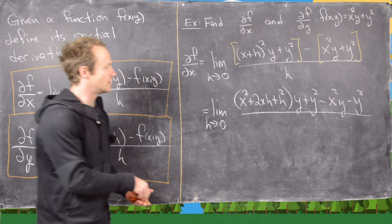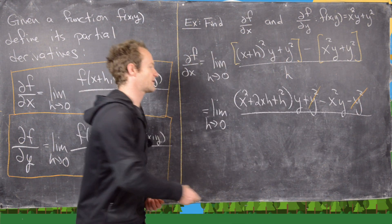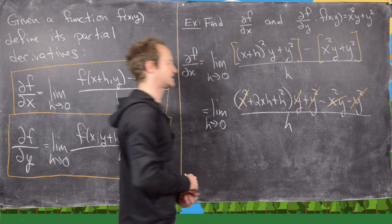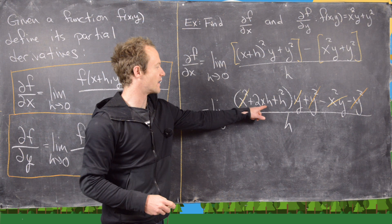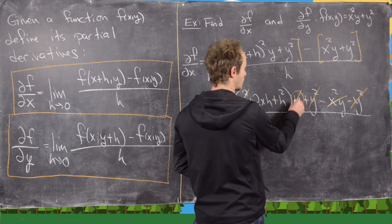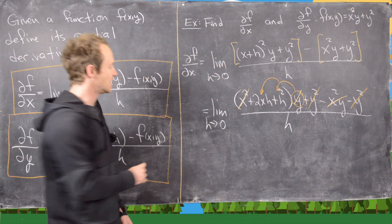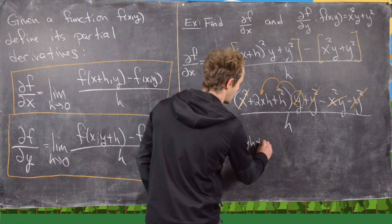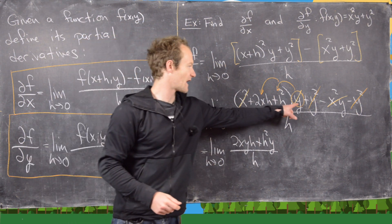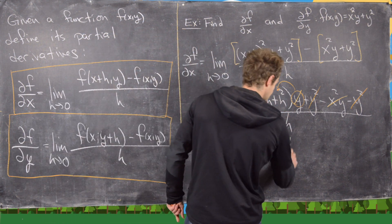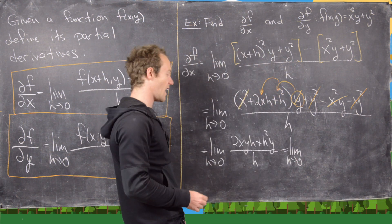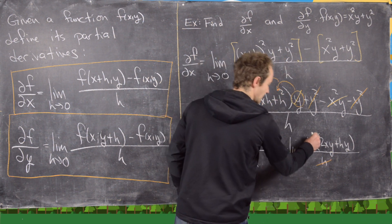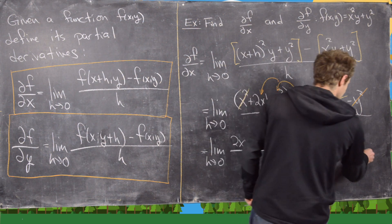Now let's see what can simplify. The y squared terms cancel, and x squared y cancels with that term. What we're left with is something we can factor an h out of. Distributing the y gives us the limit as h approaches 0 of 2xyh plus h squared y, all over h. Factoring out h, those h's cancel, and letting h approach 0 gives us 2xy.